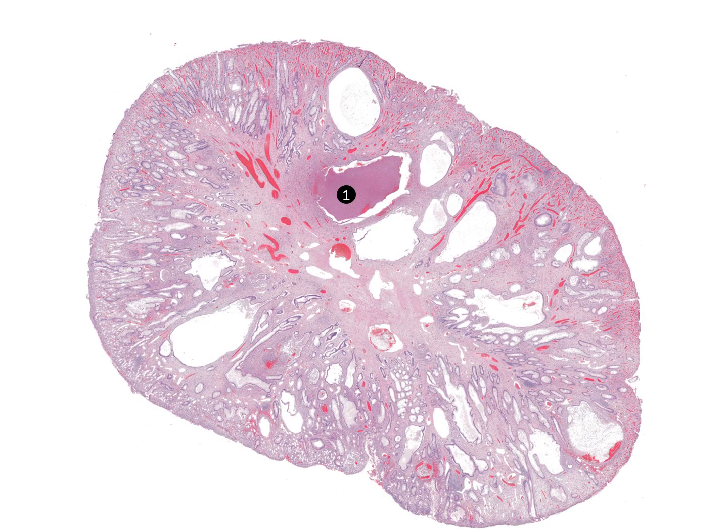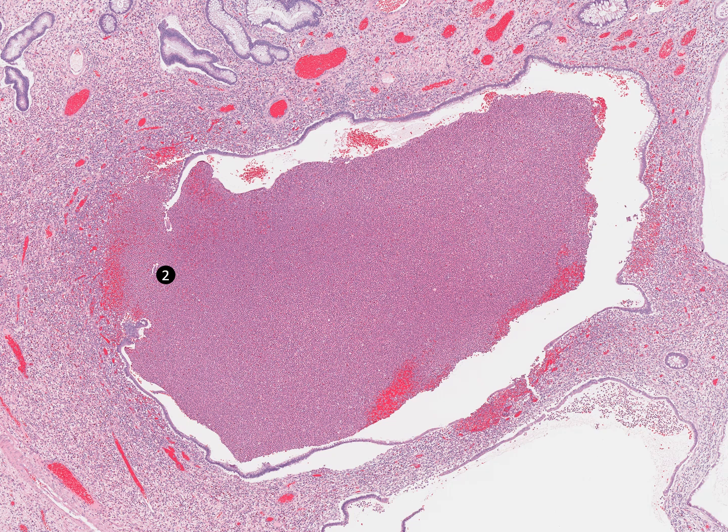Juvenile polyps are the most common type of pediatric intestinal polyp. The polyp surface is frequently eroded. These polyps are characterized by the presence of prominent cystically dilated glands filled with mucus and inflammatory debris within an edematous lamina propria.